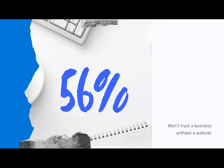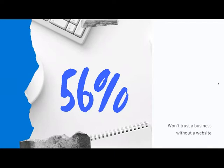If someone considers doing business with you, does a Google search, and can't find a website, half of them are not going to do business with you. This is a consistent year-on-year Australian statistic — 56% of people won't do business with you if they can't find a website.